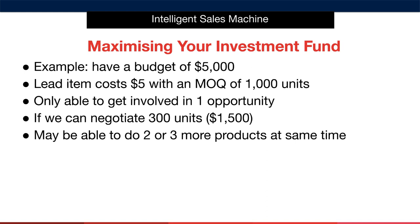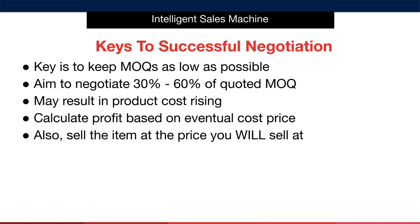Try to order as little as you possibly can when first launching. This doesn't mean that you should cheap out when investing — we're focused on optimizing our investing rather than saving. The simplest way to keep your MOQ as low as possible is to aim to negotiate 30% to 60% of the quoted MOQ from the supplier. In this way you're generally going to be ordering enough units to get a feel for the market while reducing your risk.